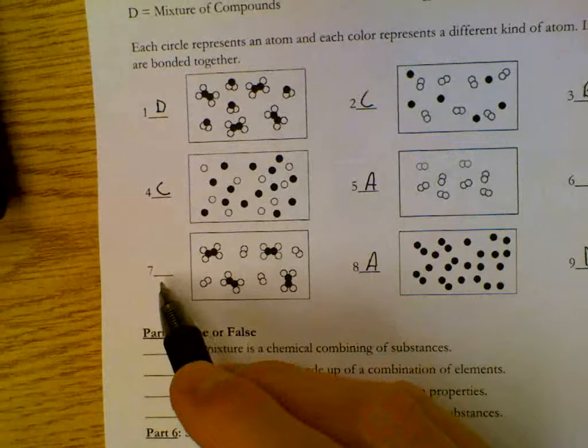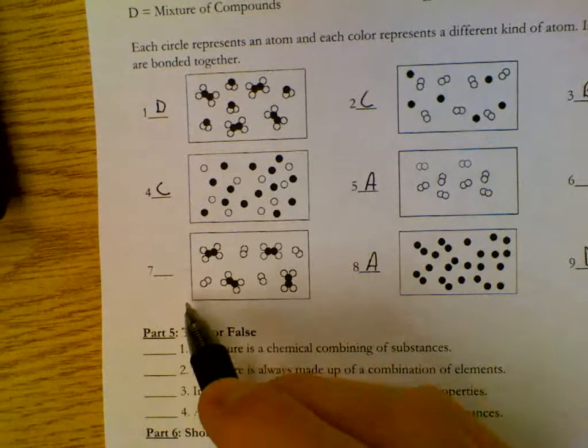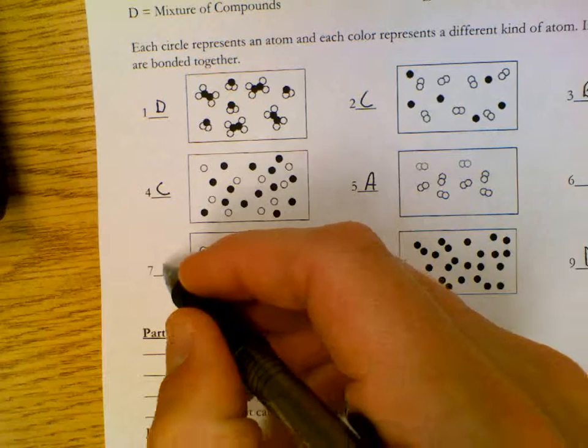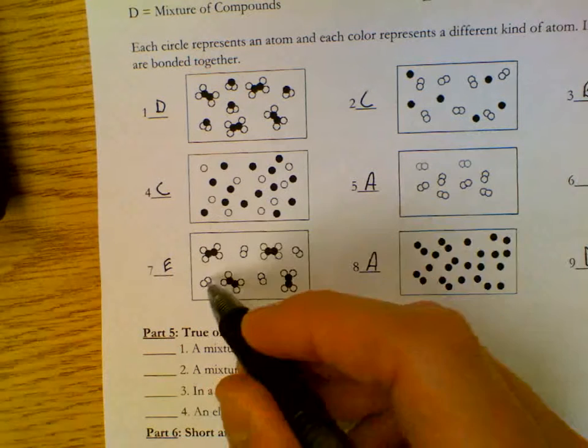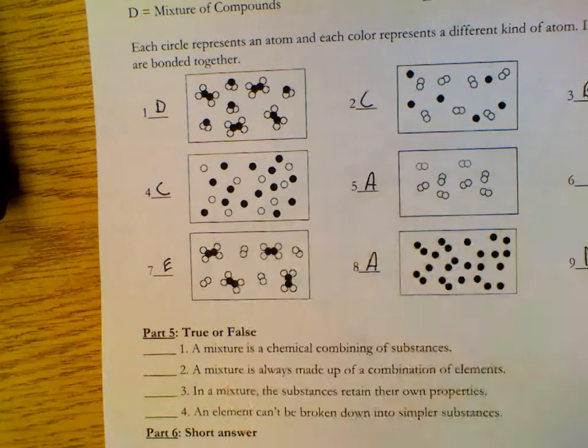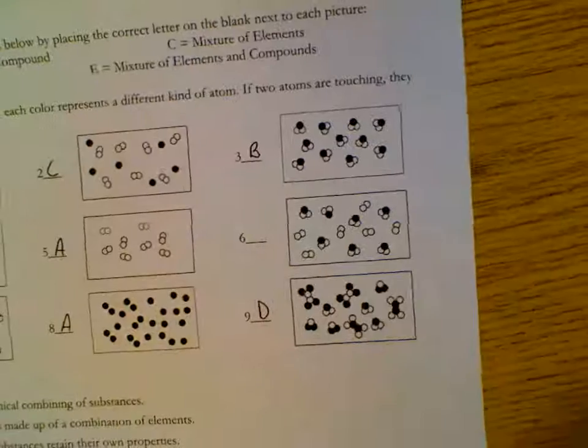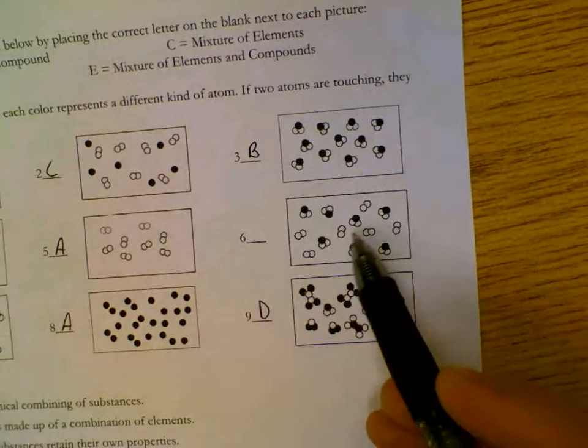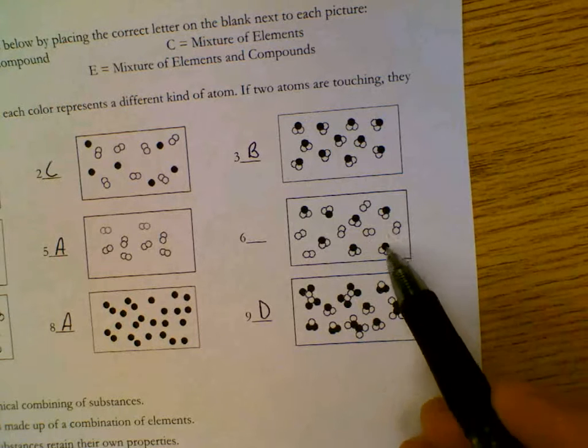Letter E will be mixtures of elements and compounds. The last two should be E. Here's my elements. Here are my compounds. Here are my elements and compounds.